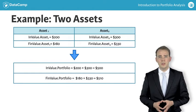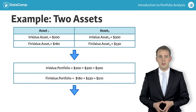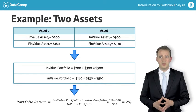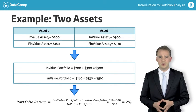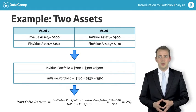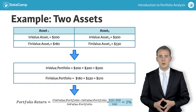It follows that the simple return on the portfolio is a $10 change in value divided by the initial $500 invested, which gives us a return of 2%.